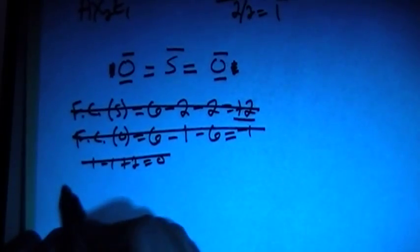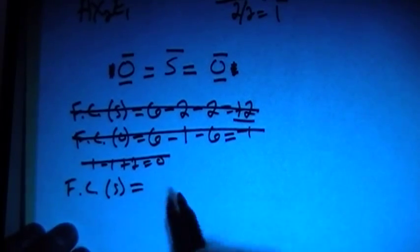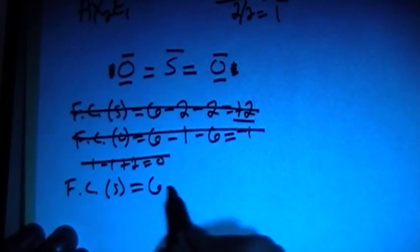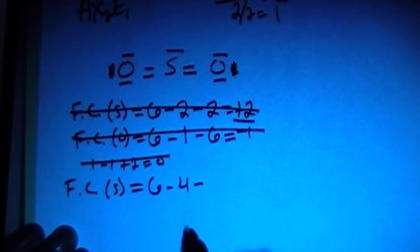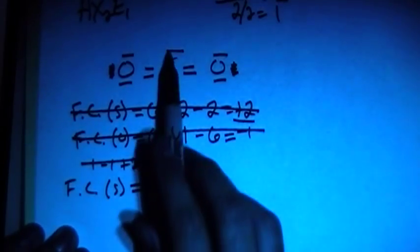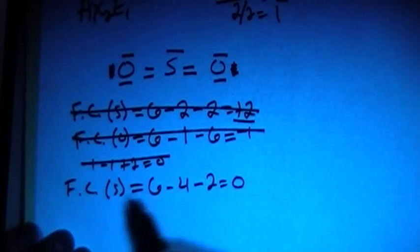So the new formal charge calculation is going to consist of, we've got the formal charge for sulfur, which is going to be the 6 valence brought in, minus 1, 2, 3, 4 bonds. Because remember, a double bond is count for 2 bonds, not just 1. And then minus the 2 electrons up here that are non-bonding, minus 2, and that gets a 0. That looks better.